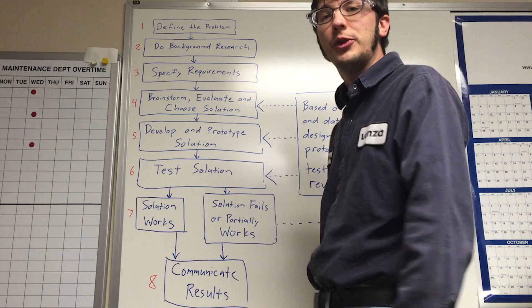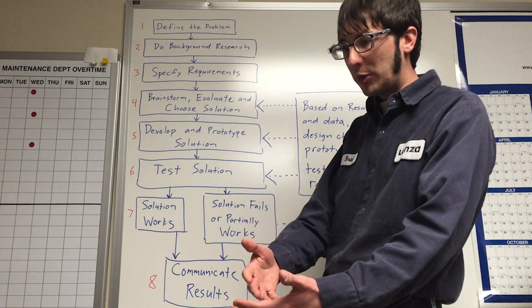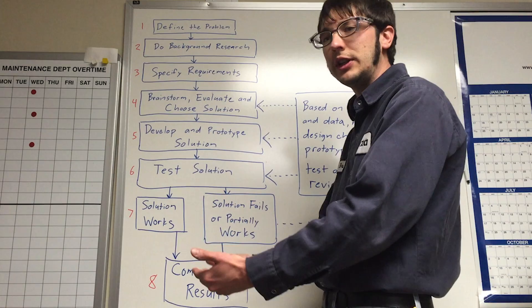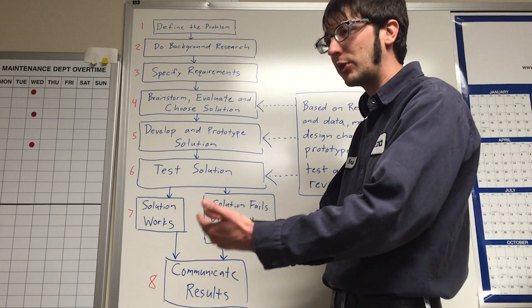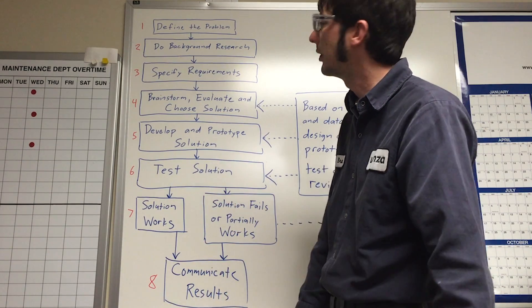Next, step number three is specify requirements. You have a problem. How should it be acting? What do you need to do to fix it? What's the end result or the goal that you're trying to achieve with the problem solution?